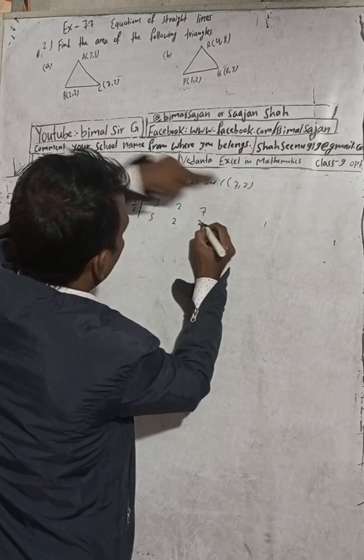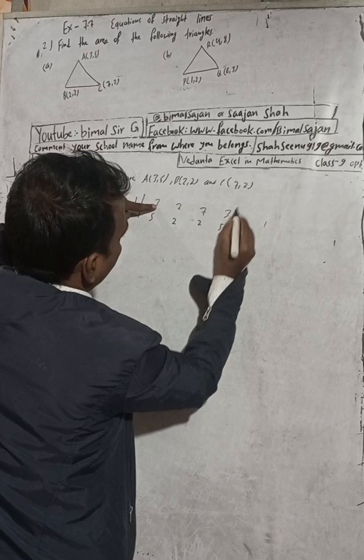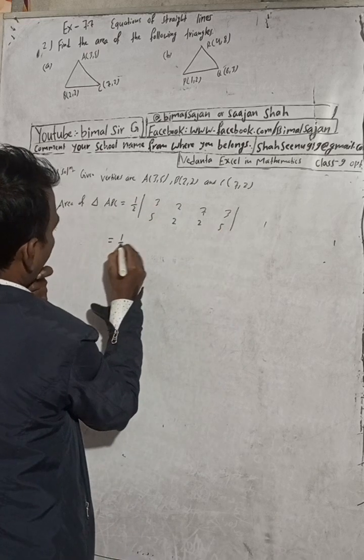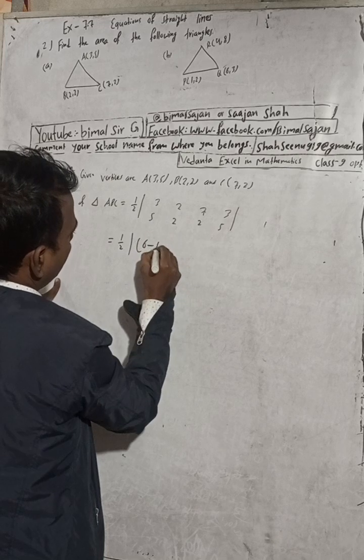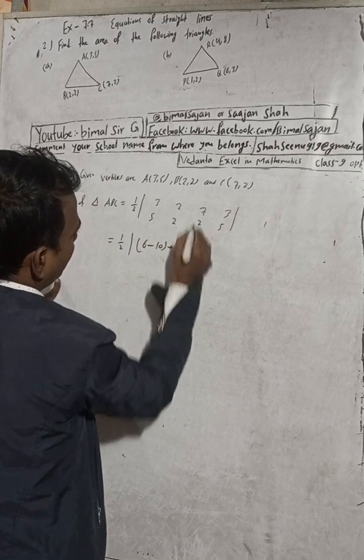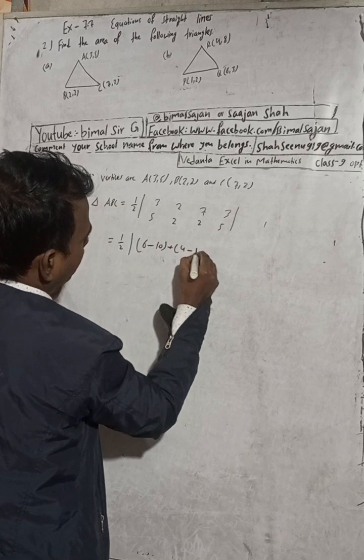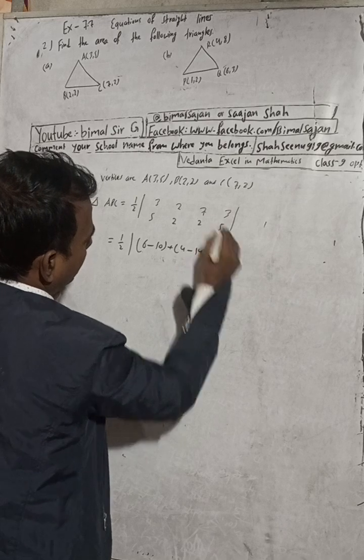Repeat the first row: 3, 5. This is 1/2 modulus: 3×2 is 6 minus 5×2 is 10, plus 2×2 is 4 minus 7×2 is 14, plus 7×5 is 35 minus 2×3 is 6.